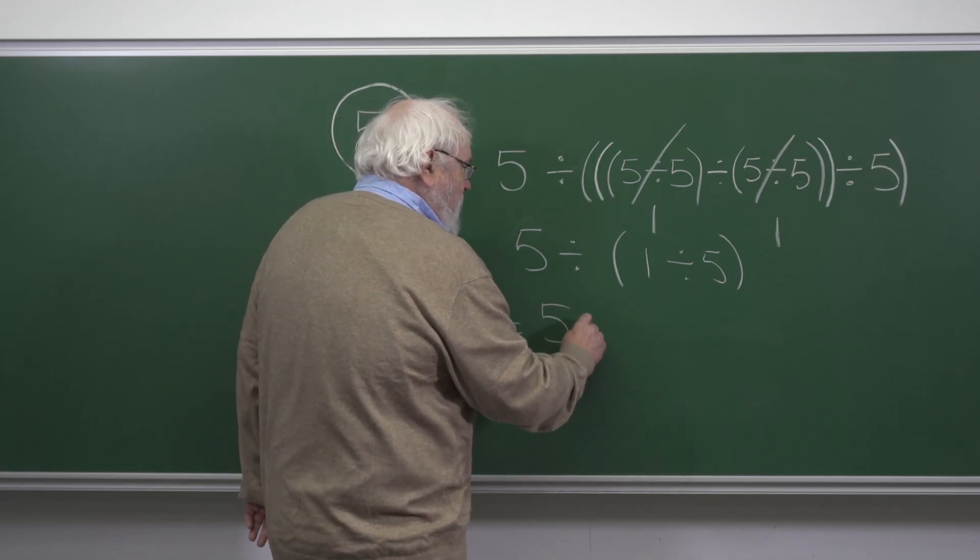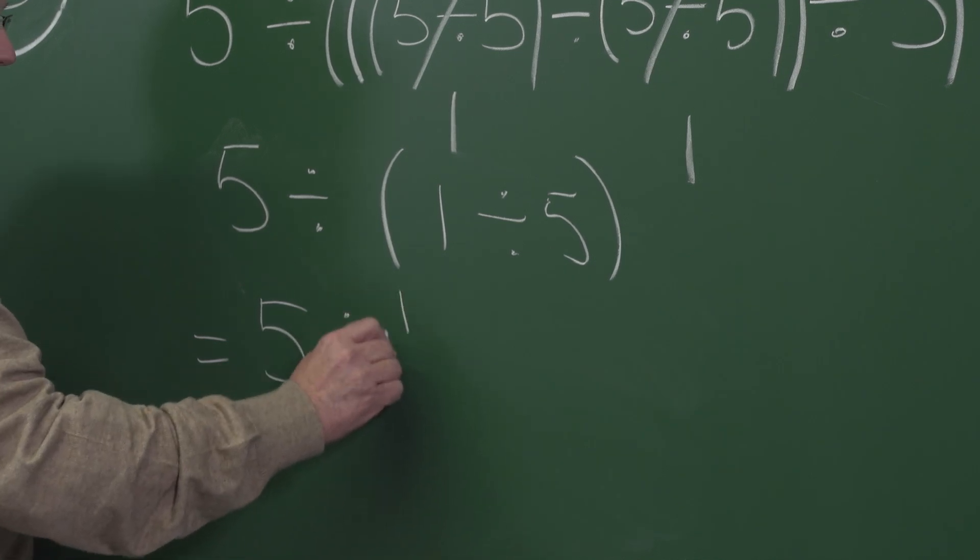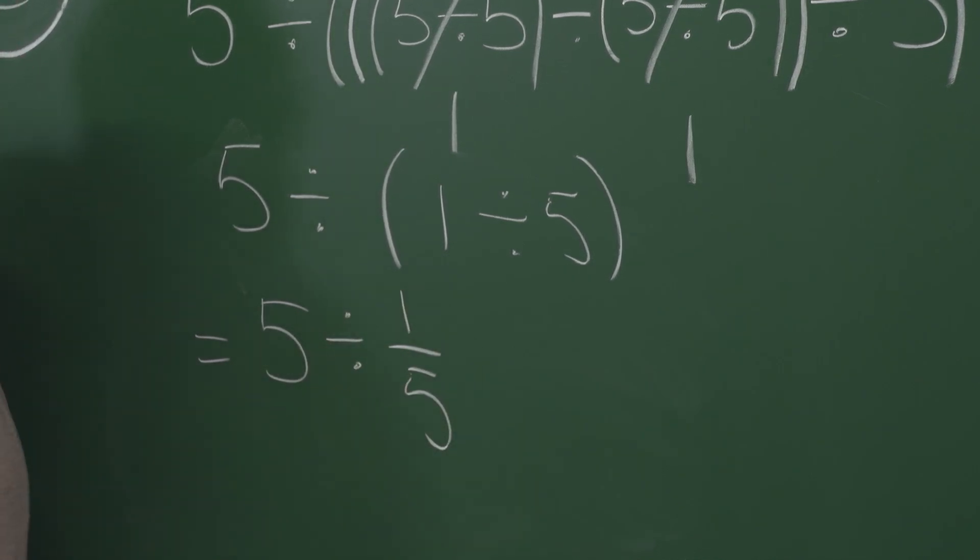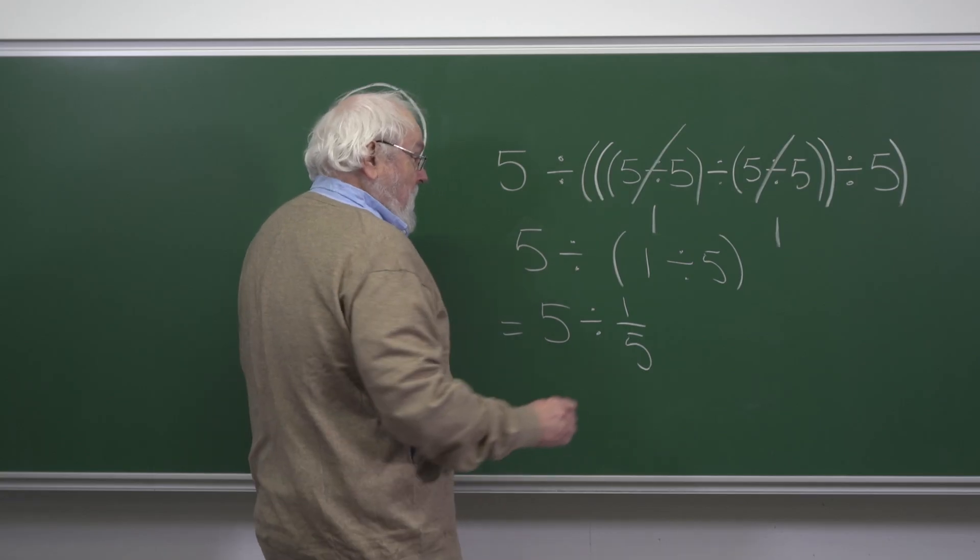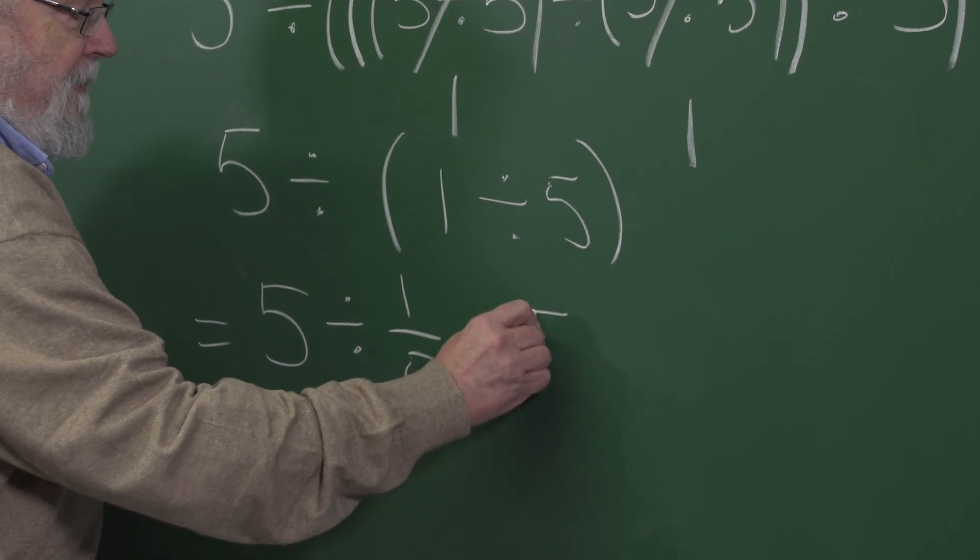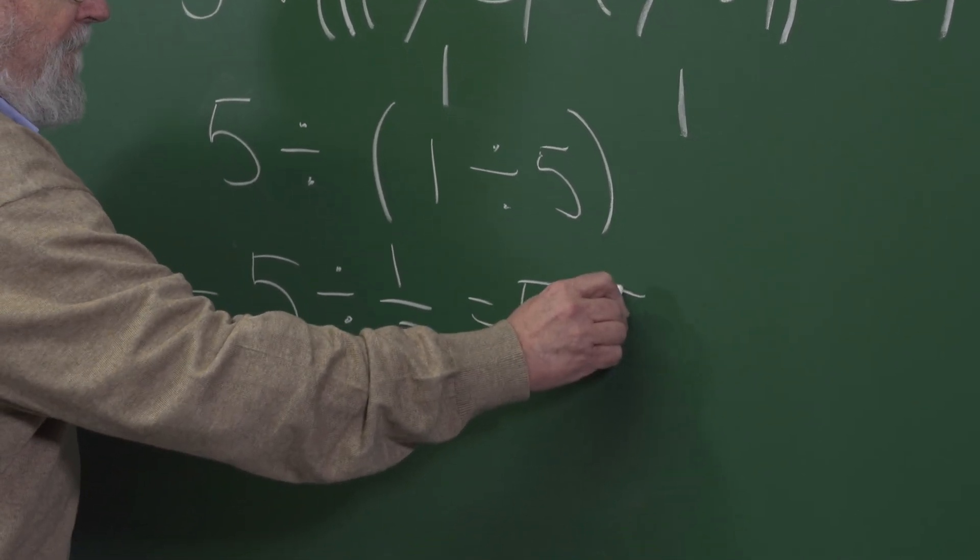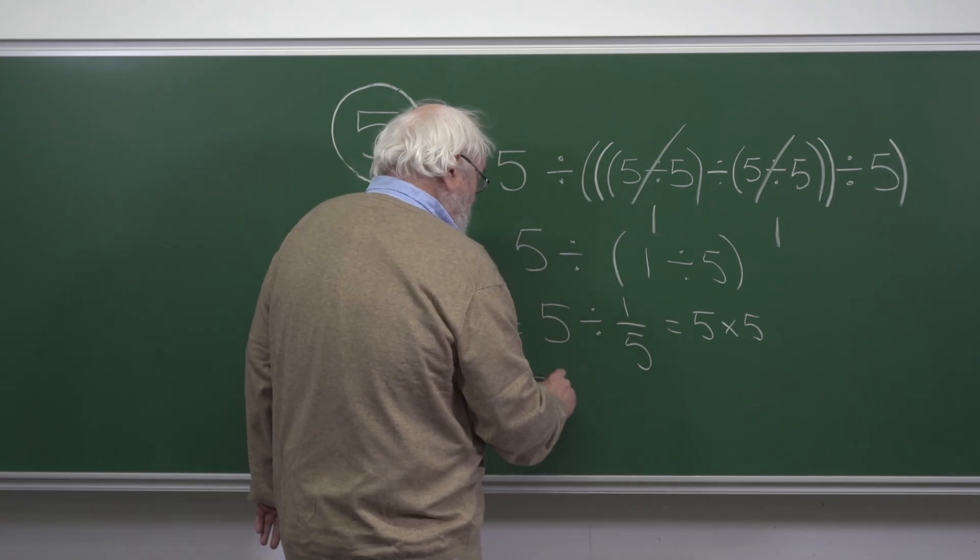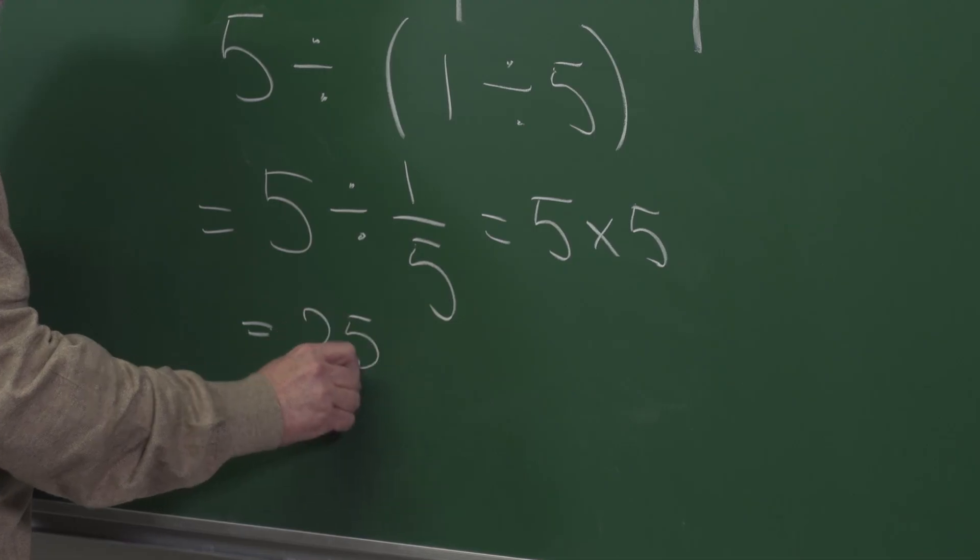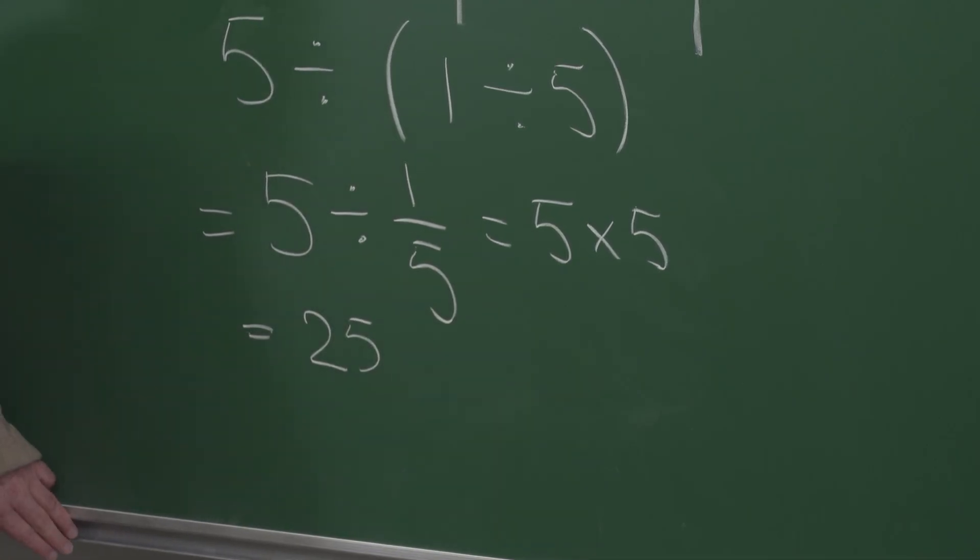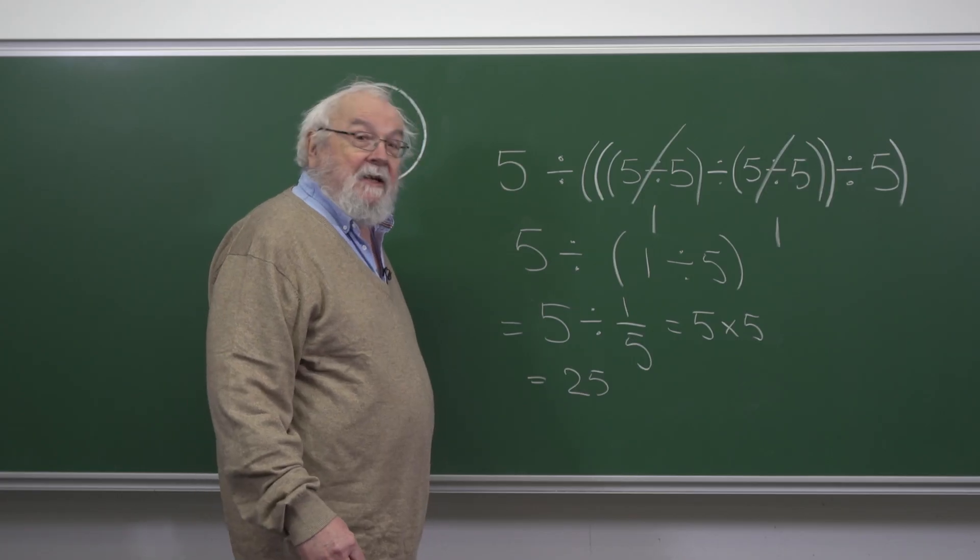Now that's one divided by a fifth, which is 5 times 5, which is 25. So we give the answer E.